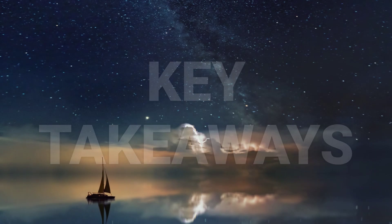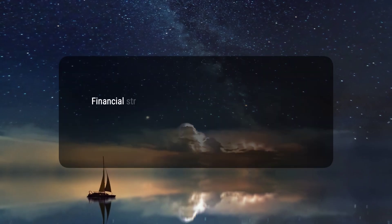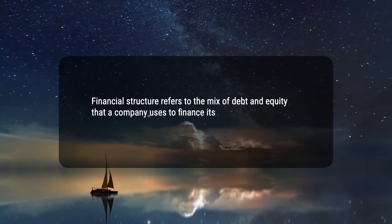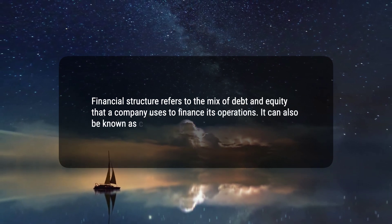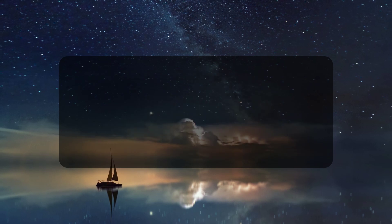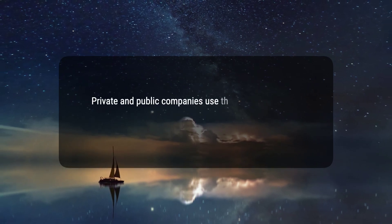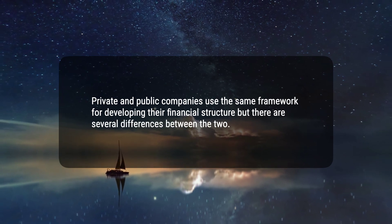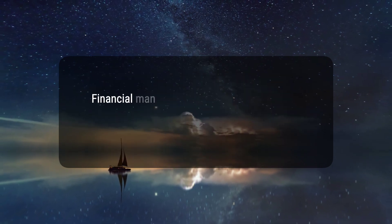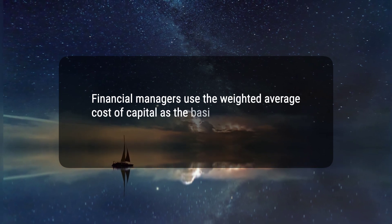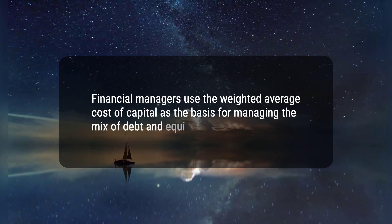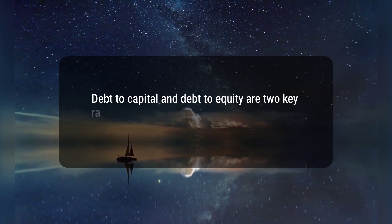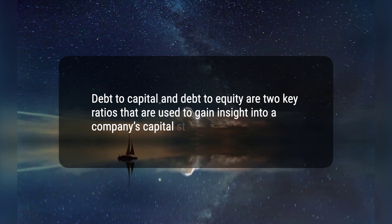Here are 4 key takeaways. 1. Financial structure refers to the mix of debt and equity that a company uses to finance its operations. It can also be known as capital structure. 2. Private and public companies use the same framework for developing their financial structure but there are several differences between the two. 3. Financial managers use the weighted average cost of capital as the basis for managing the mix of debt and equity. 4. Debt to capital and debt to equity are two key ratios that are used to gain insight into a company's capital structure.